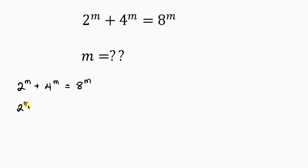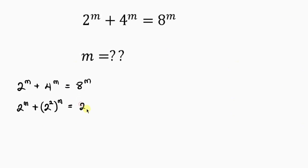So this is 2 to the power of m plus — let's express 4 in terms of 2: write 2 to the power of 2, because 2 squared gives me 4, and raise that to power m. Equal to — 2 to the power of 3 gives me 8, so raise that to the power of m.